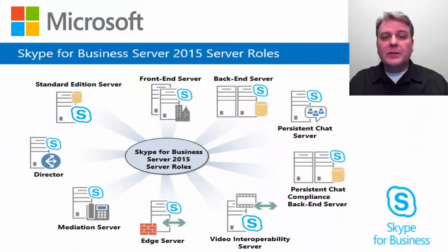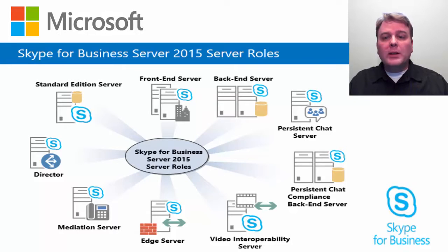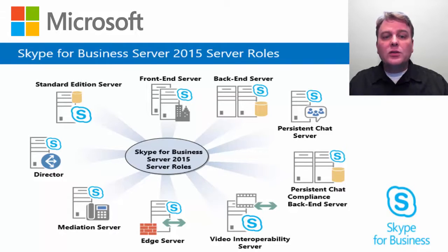For most server roles, for scalability and high availability, you can deploy pools of multiple servers all running the same server role. Each server in a pool must run an identical server role or roles. For most types of pools in Skype for Business Server, you must deploy a load balancer to spread traffic between the various servers in the pool. Skype for Business Server supports both DNS load balancing and hardware load balancers.